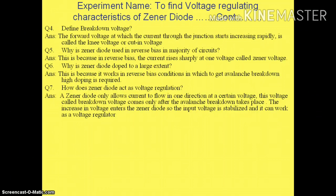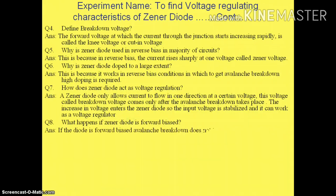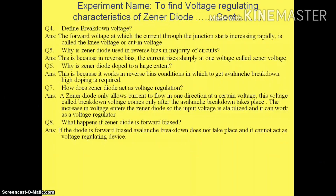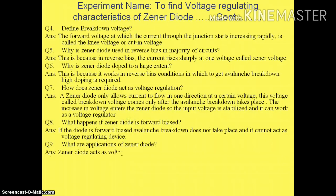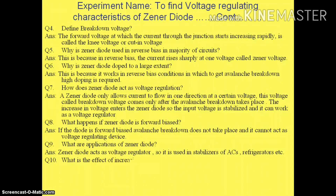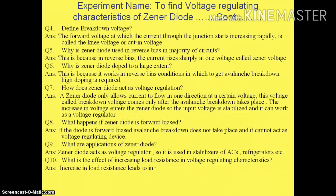The increase in input voltage is stabilized by the Zener diode so it can act as a voltage regulator. What happens if a Zener diode is forward biased? Avalanche breakdown does not take place and it cannot act as a voltage regulating device. What are the applications of Zener diode? It acts as a voltage regulator and is used in stabilizers of ACs, refrigerators, etc. What is the effect of increasing load resistance? It leads to an increase in output voltage, after which the output voltage becomes constant.